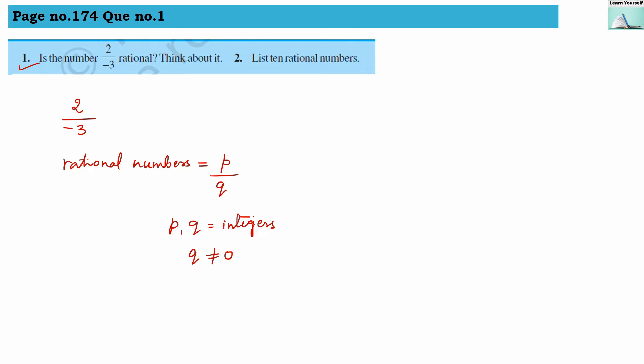So 2 by minus 3 is a rational number. Our answer here is yes, it is a rational number. Our second question is: list 10 rational numbers. So our number should be in the format of p divided by q